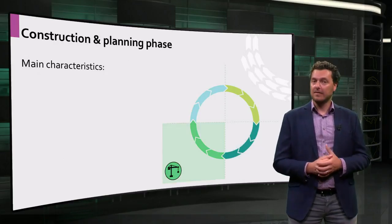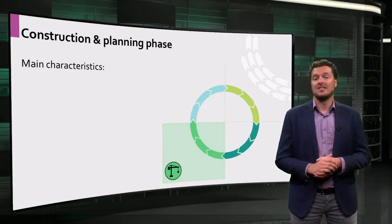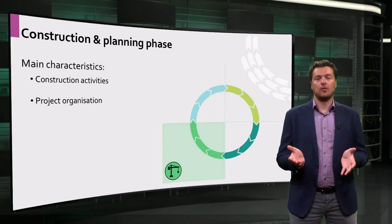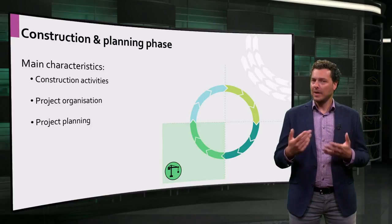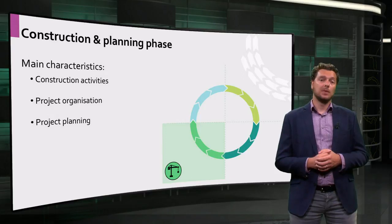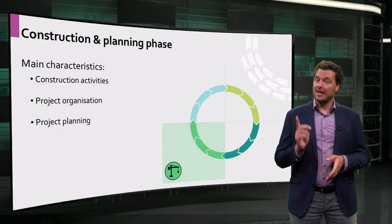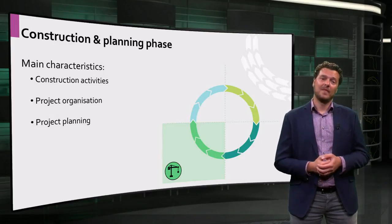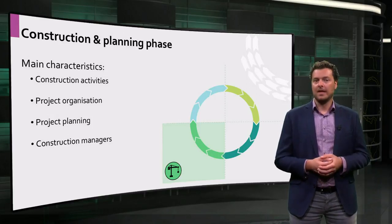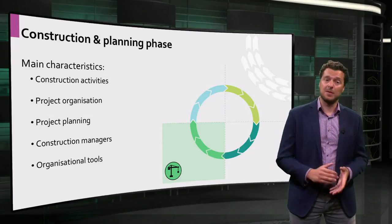Then in the construction and planning phase, you are finally going to rebuild something. But in order to realize your design, you need to decide what construction activities are needed, who is going to perform them, and how you are going to plan all of this. Note that multiple parties work together to realize a building adaptation. This involves a lot of information sharing, collaboration, and smart planning. Construction managers carefully manage the realization of building adaptation. They will apply organizational tools like work structures and planning schemes.